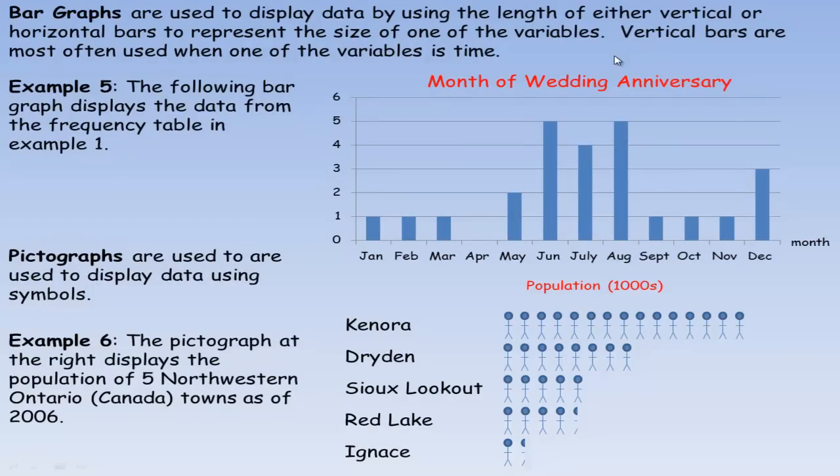Bar graphs are used to display discrete data by using the lengths of either vertical or horizontal bars to represent the size of the variables. Vertical bars are most often used when one of the variables is time. In this example, the bar graph displays the data from the frequency table in example one, the wedding anniversary month. January had one, February one, March one, April none, May two, June five, July four, etc. One variable is across the bottom (months), and the frequency goes up the side. That's an example of a vertical bar graph.